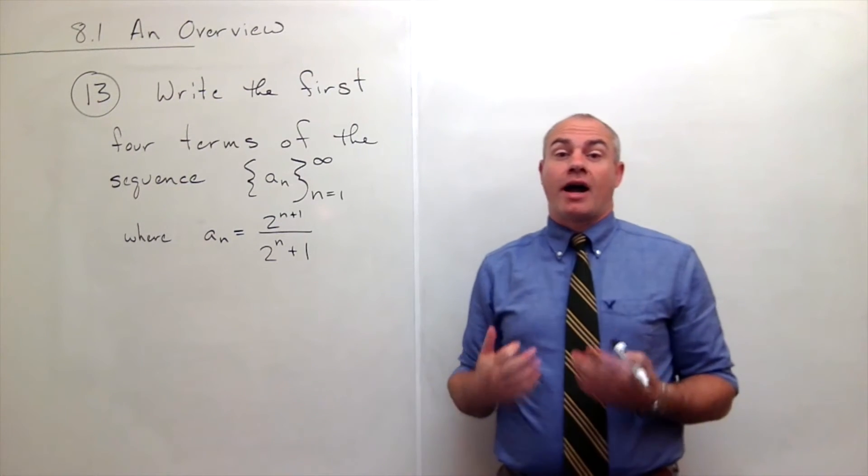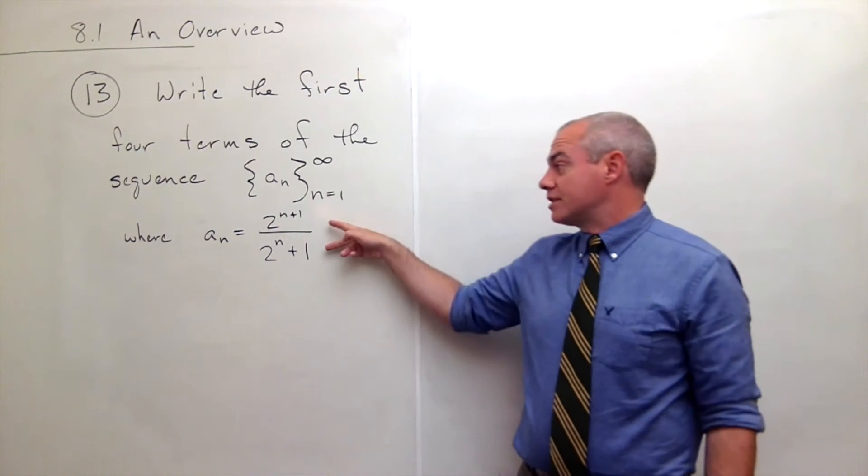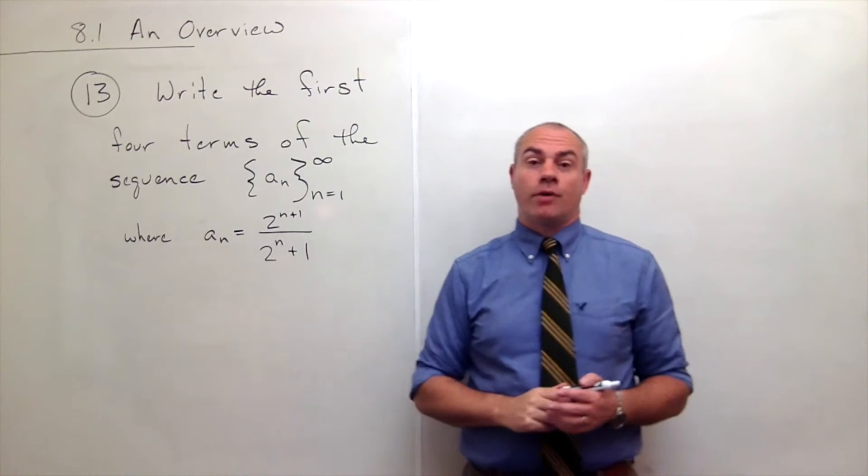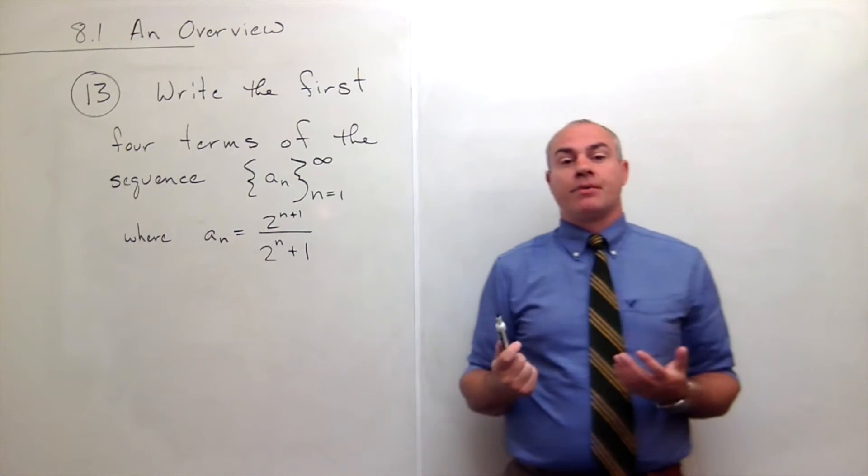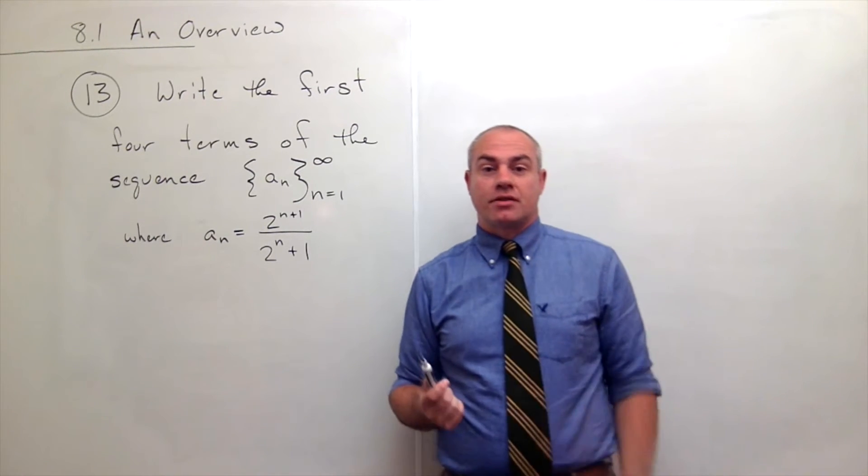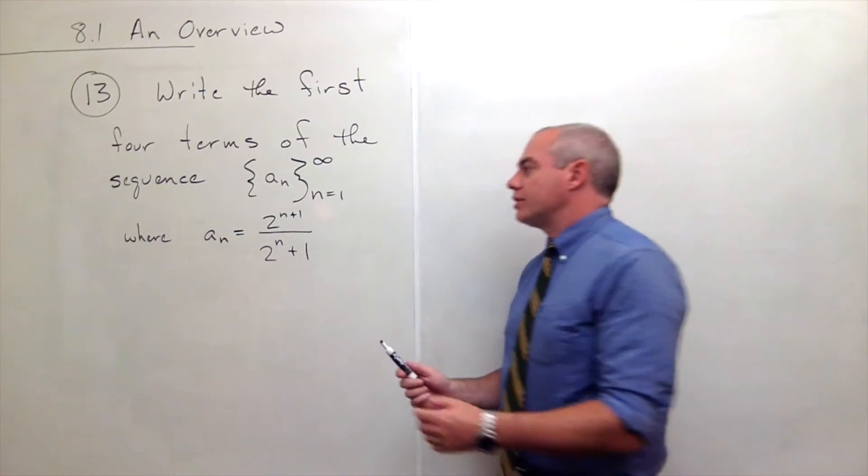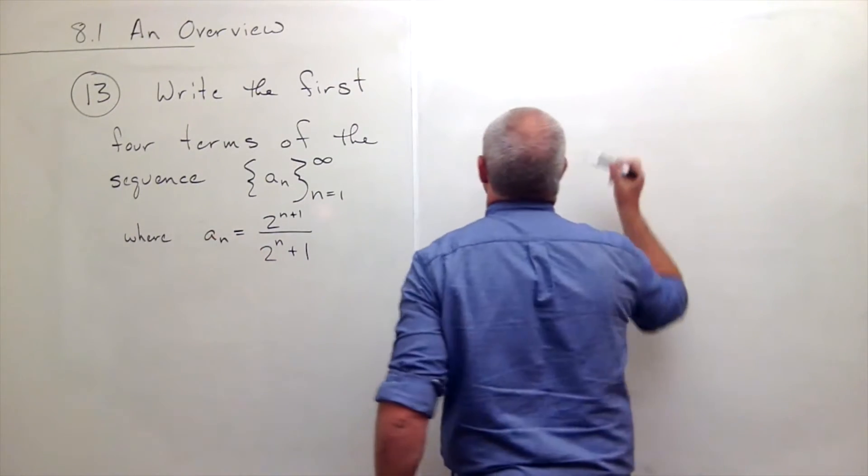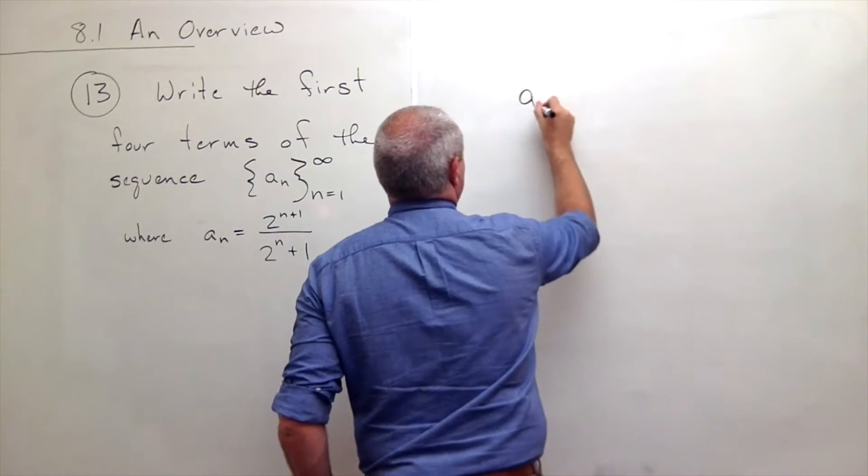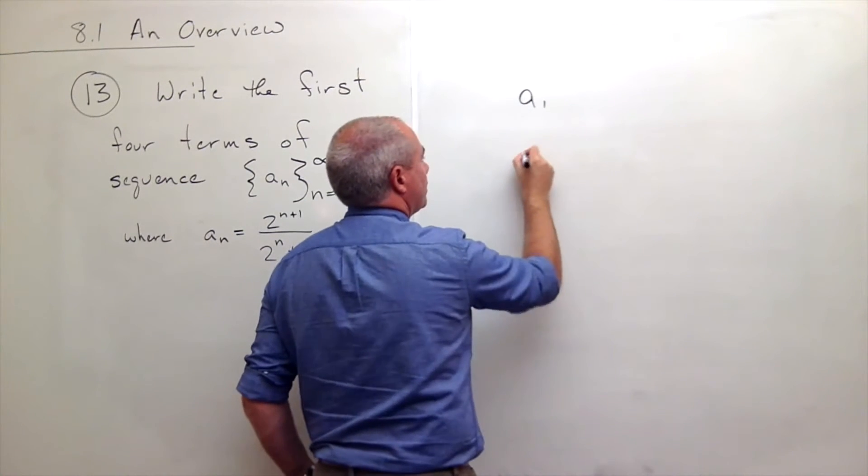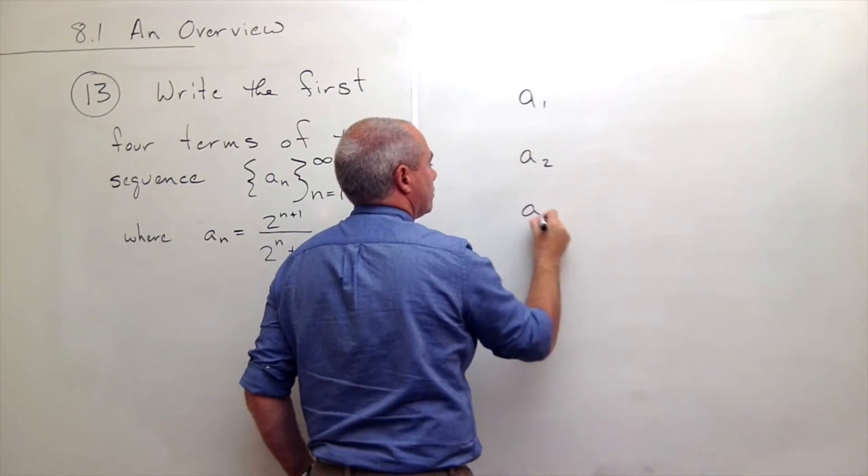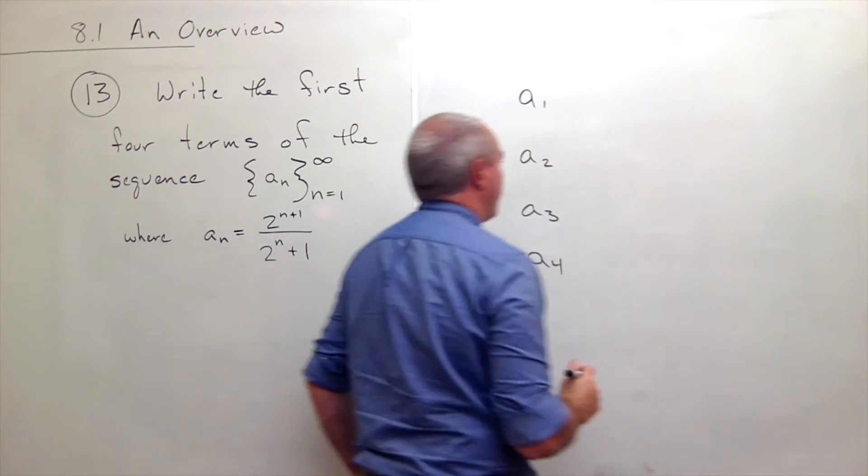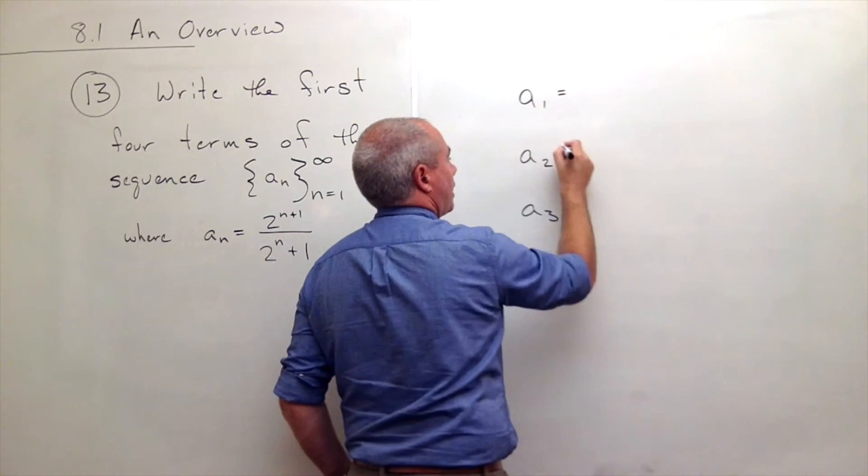We're just trying to get a feel here for how we deal with sequences that are written in a closed form like this and how we can get a feel for what these things look like. So what we're going to do is we want the first four terms, and we're really looking for a1, a2, a3, and a4.